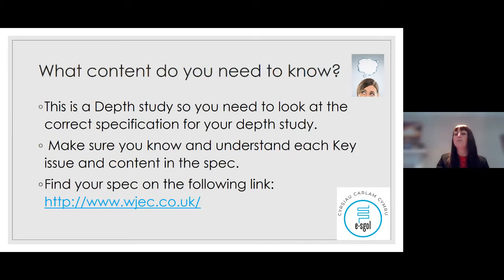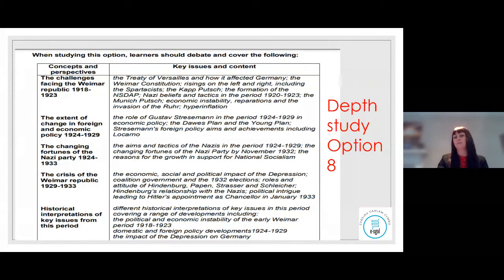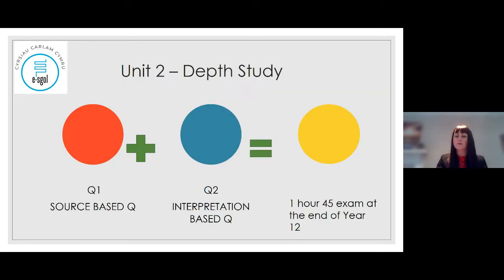For your individual depth study, you need to look at the correct specification first. Make sure you know and understand each key issue and content area. If you don't have it to hand, there's a link to the WJC website where you can find the specification — type it in and find your Unit Two depth study topic area. You'll need to know everything in your section in depth. Just to recap, Unit Two involves a Question One which is source-based, and a Question Two which is interpretation-based, in an exam of one hour and 45 minutes.